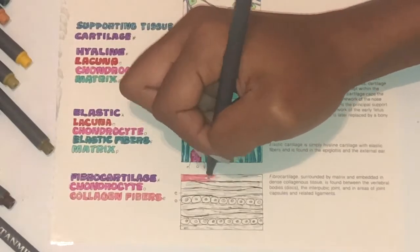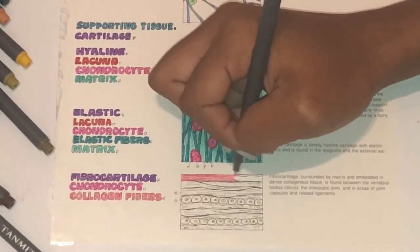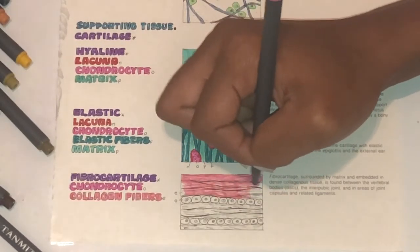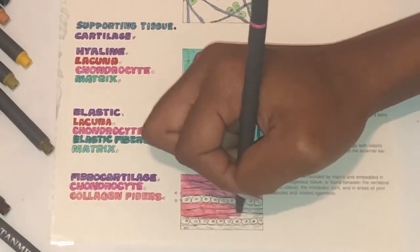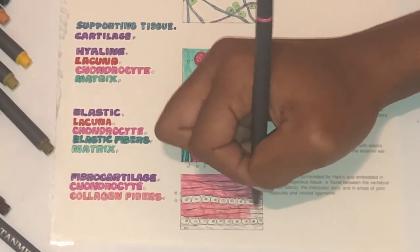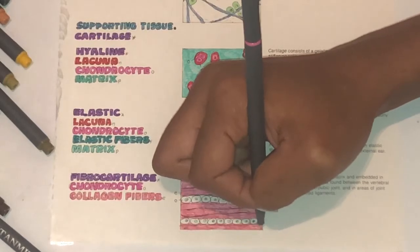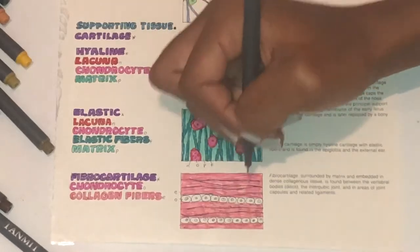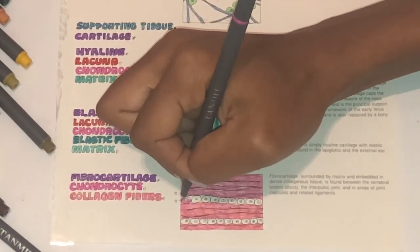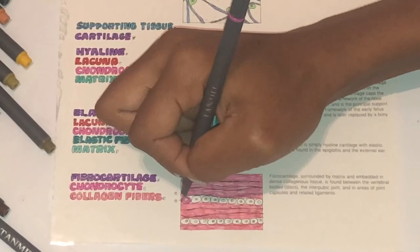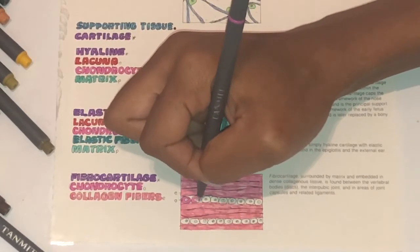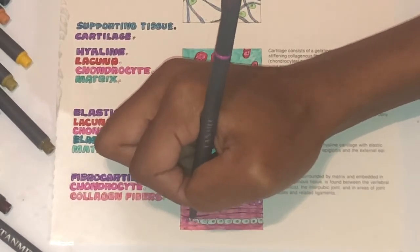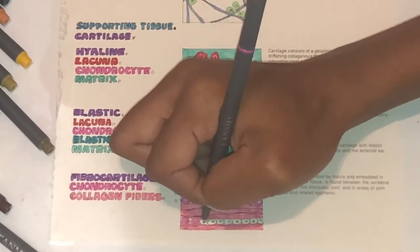So fibrocartilage is surrounded by matrix and embedded in dense collagenous tissue, is found between the vertebral bodies, discs, the interpubic joint and in areas of joint capsules and related ligaments. And we're going to go ahead and color those collagen fibers and the chondrocyte in, which makes up the fibrocartilage.